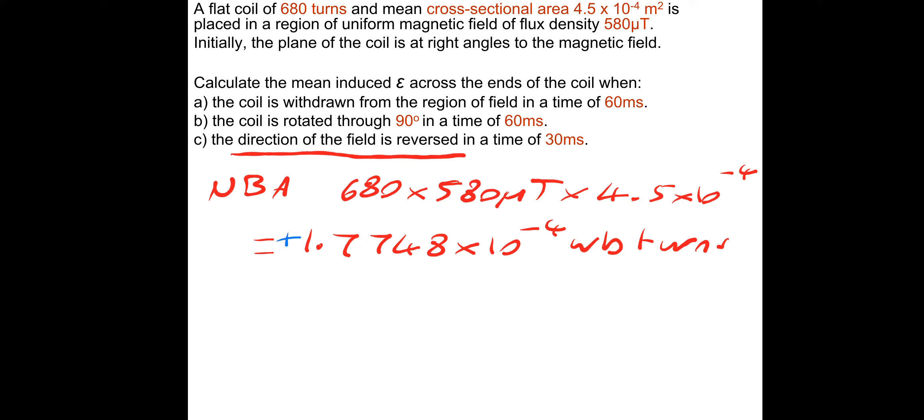Now if we are reversing the direction of the field, that means we're going from that at a positive value initially. And if we reverse the direction, we're going to get the exact same value but in the opposite direction. And EMF is obviously given by the rate of change of flux, so it's the flux linkage divided by time. So we're going to have to do plus 1.7748 times 10 to the minus 4 minus minus 1.7748 times 10 to the minus 4, so it's just double the original maximum flux. So if we do that, let's basically add them together and then divide by the time because EMF is changing flux linkage divide by changing time. So we're going to divide by 30 times 10 to the minus 3 seconds. That will give you an EMF of 12 millivolts.